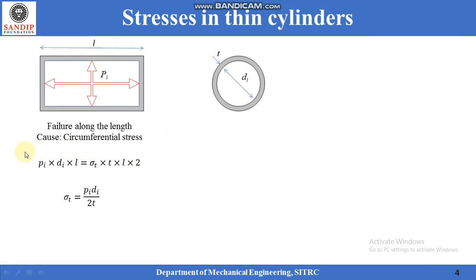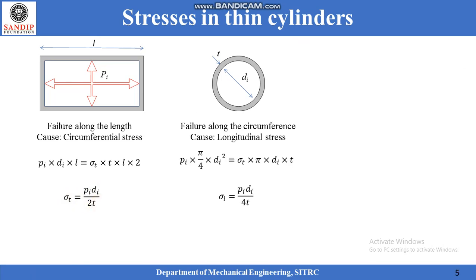When the cylinder is failing, the equilibrium of forces is given by this equation. On the left-hand side is the force applied due to the pressure inside the cylinder, given by pressure into area. This pressure acts on a rectangular area having width di and length l. On the right-hand side we get the resisting force offered by the material, which is strength of the material into area of the material. The area of the material is thickness into the length of the cylinder, and there are two such cross sections, hence the number 2 appears. Rearranging gives the tangential or circumferential stress as σ = pi·di / (2t).